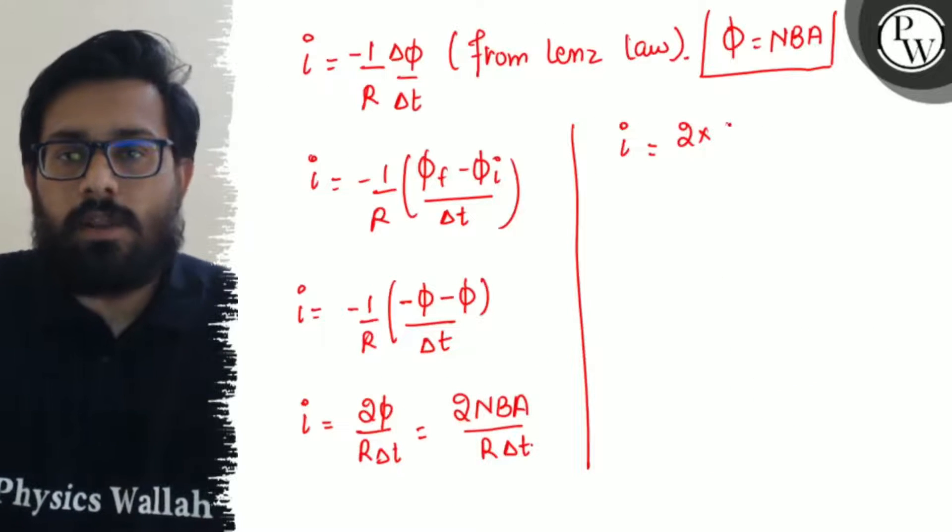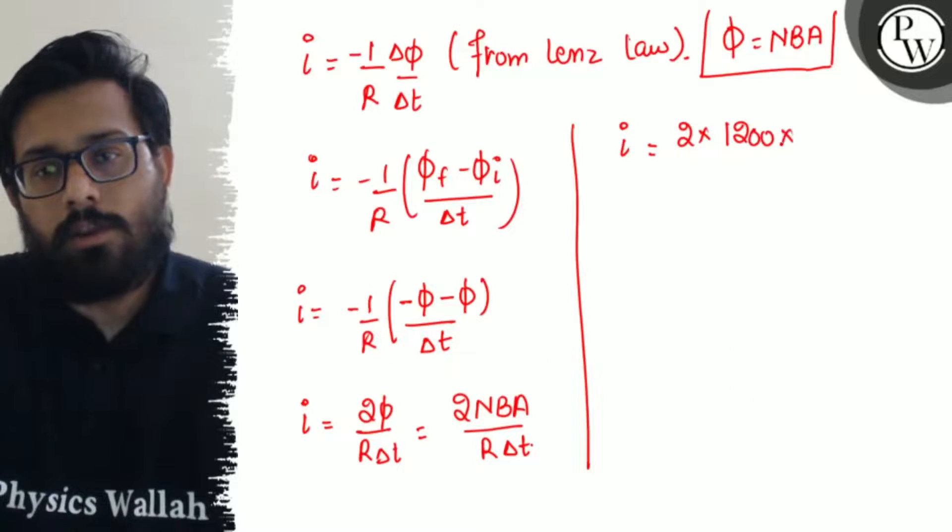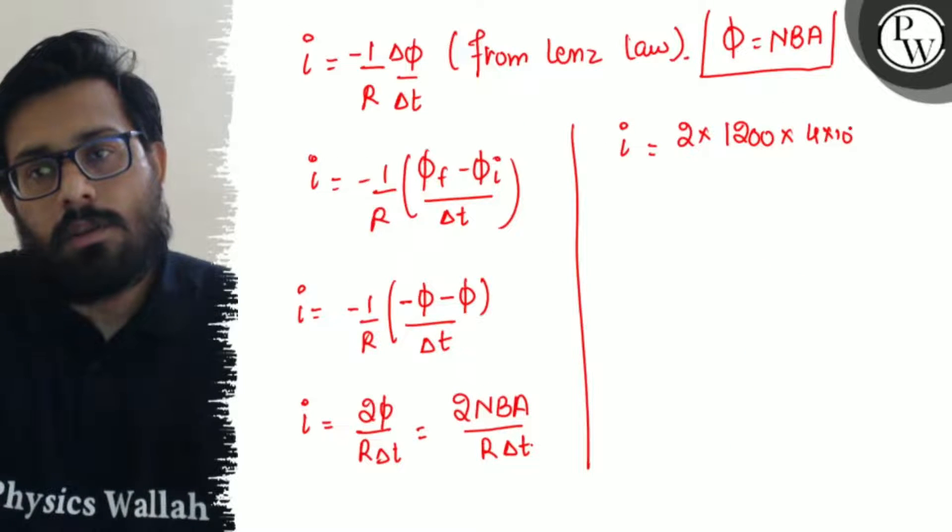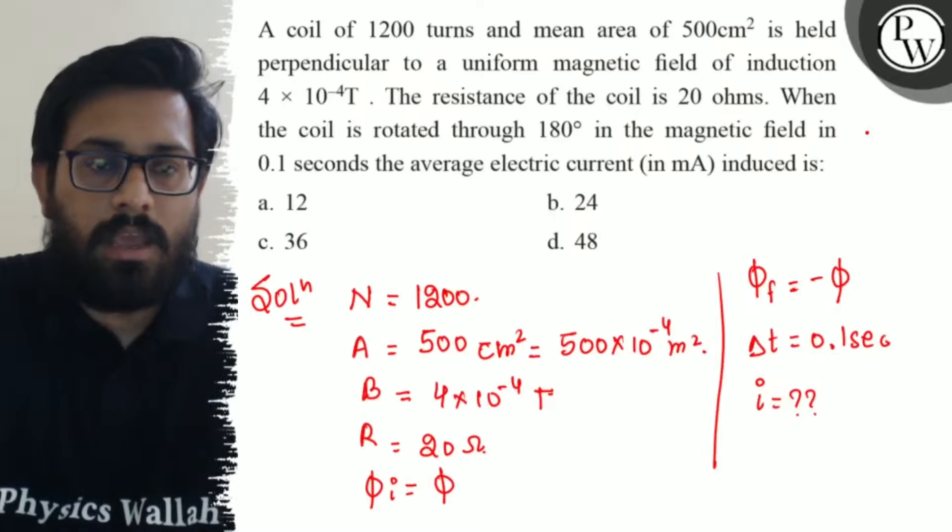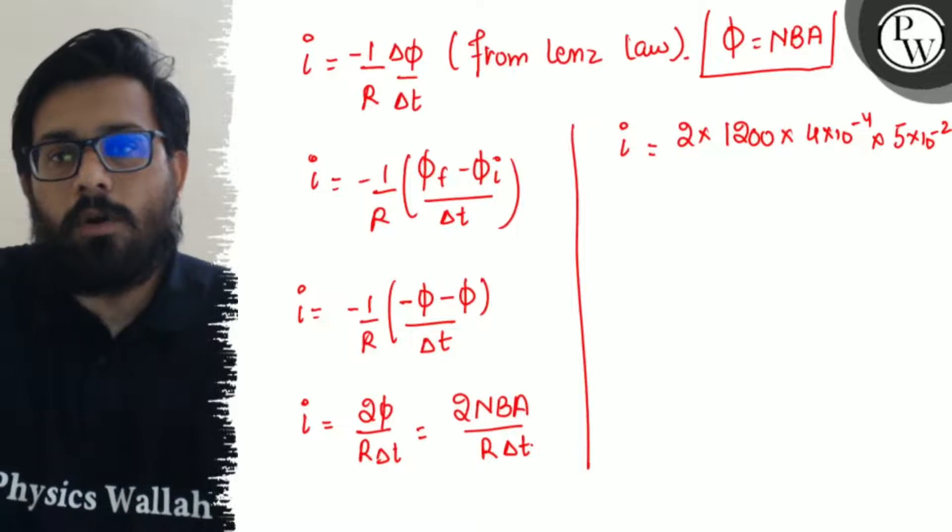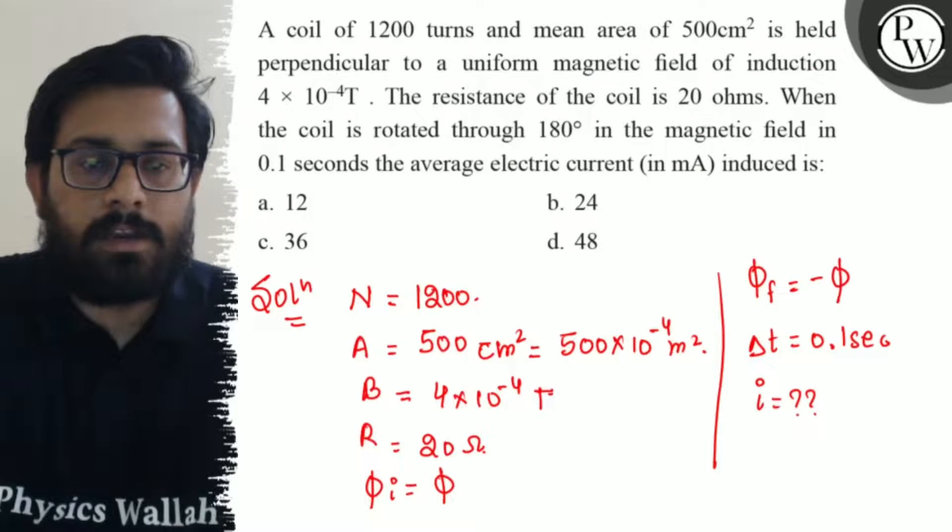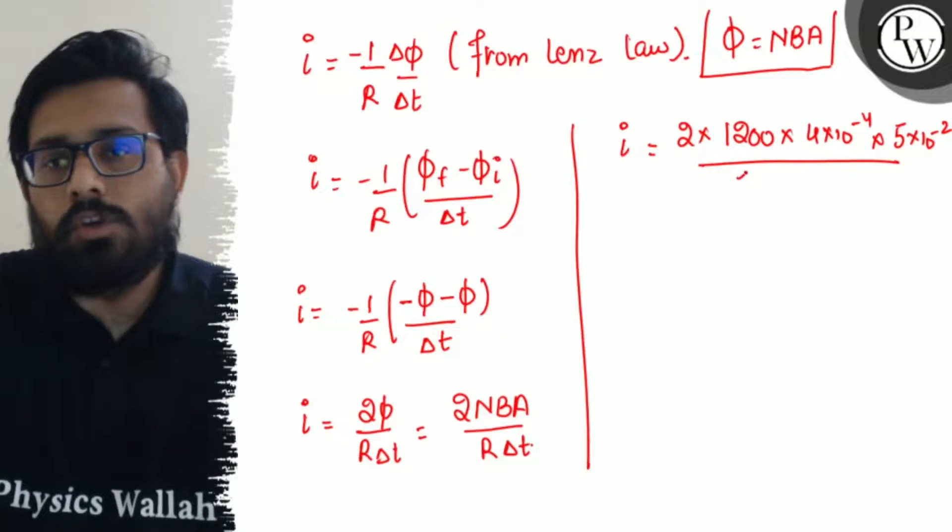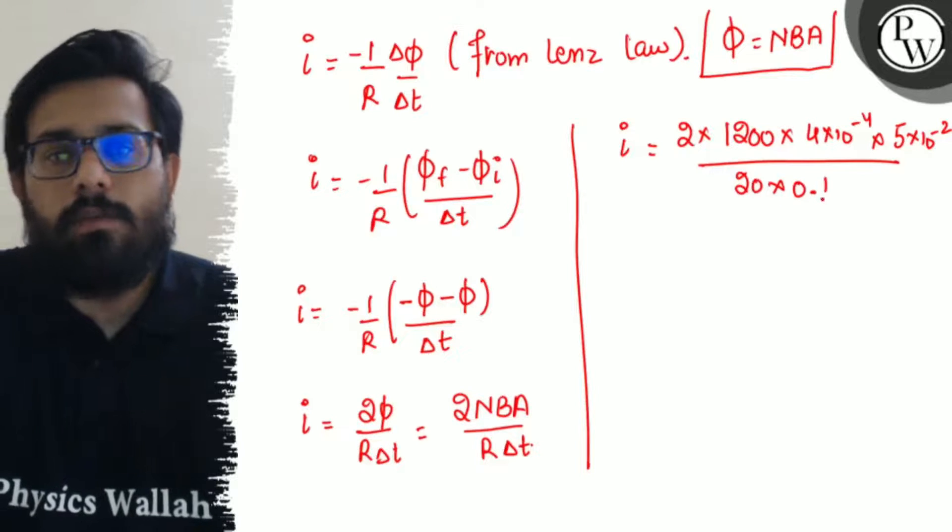Number of turns 1200 × magnetic field 4×10⁻⁴ × area 5×10⁻² divided by resistance 20 × Δt 0.1 second.